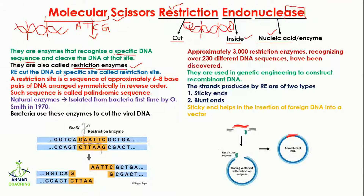The restriction enzymes cut the DNA at a specific site known as the restriction site, or the site of cutting. The restriction site is a sequence of approximately six to eight base pairs — base pair means nucleotide. These six to eight nucleotides are arranged symmetrically in reverse order, and these sequences are also known as palindromic sequences.